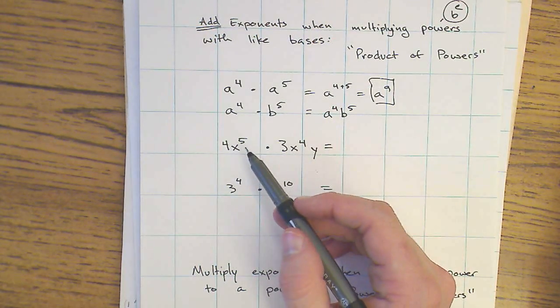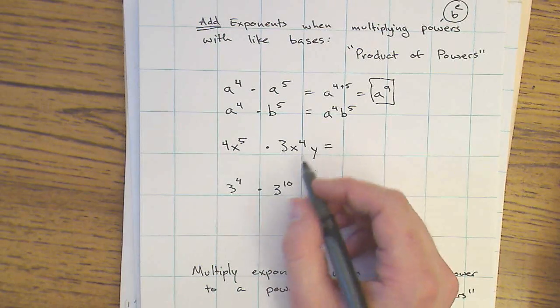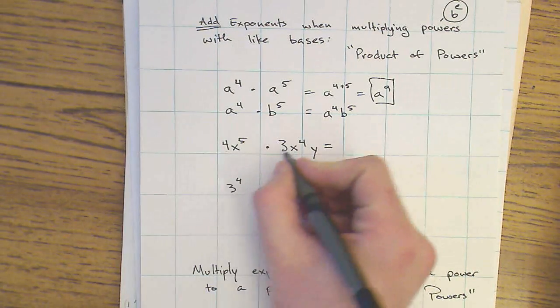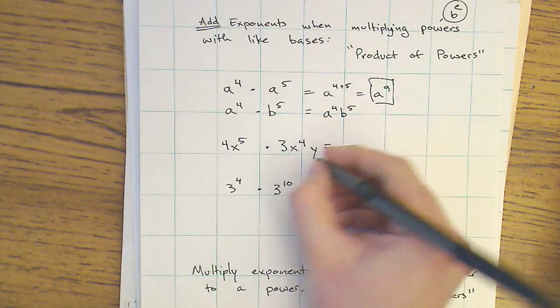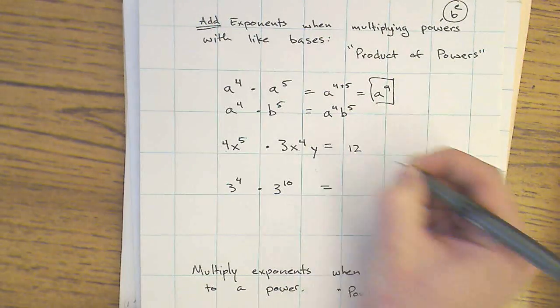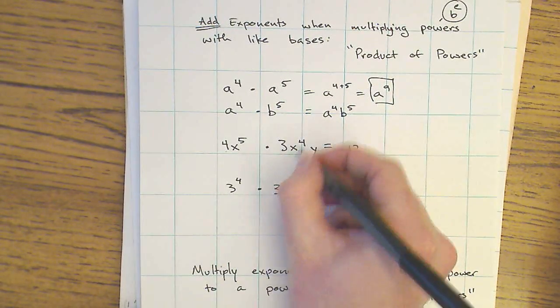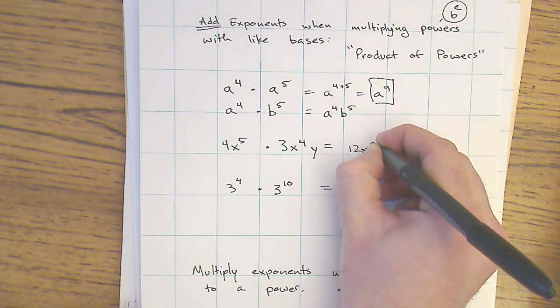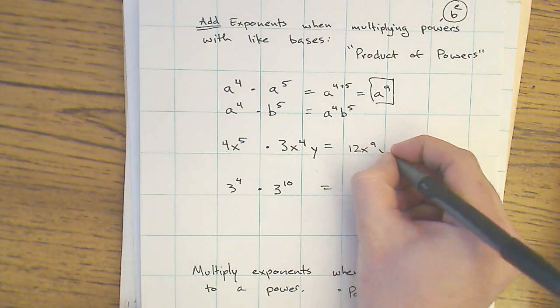Sometimes we have like bases, but we also have other terms as well. We can think of 4x to the 5th times 3x to the 4th, y, like this. 4 times 3 is 12. x to the 5th times x to the 4th, x to the 9th, y.